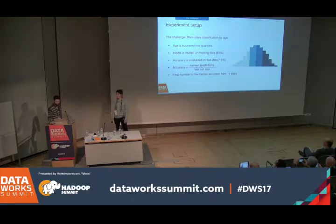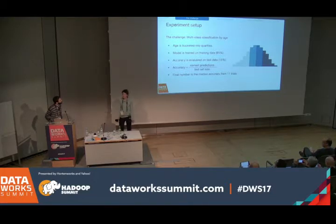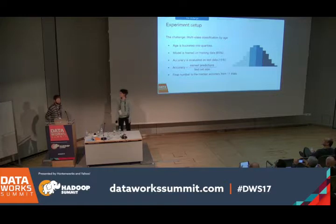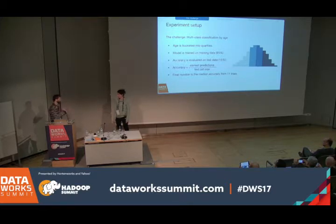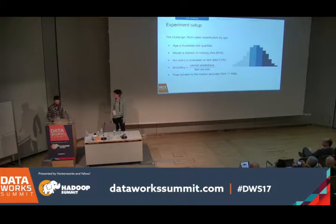So a random guess would have an accuracy of 25%, just like your machine learning model? Well, yes. But if my dataset included some attributes like the favorite band of the person, that would surely help.